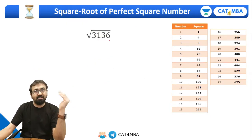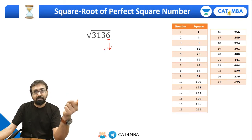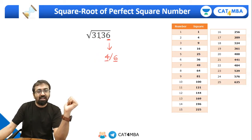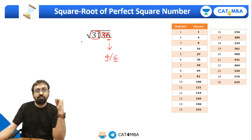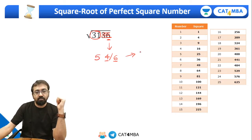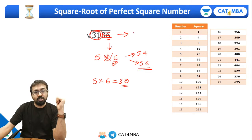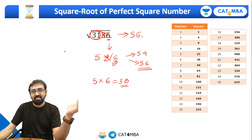Suppose we take the number 3136. The last digit is six. What digit's square ends with six? It will be four or six, because four squared and six squared both end with six. So the square root will have last digit as four or six. Strike off the last two digits and look at the remaining number: 31. Find the perfect square just below 31 — it's 25, which is five squared. So the number will be either 54 or 56. Apply the test: five times six is thirty. Since 31 is more than 30, we go with the larger — 56. The square root of 3136 is 56.